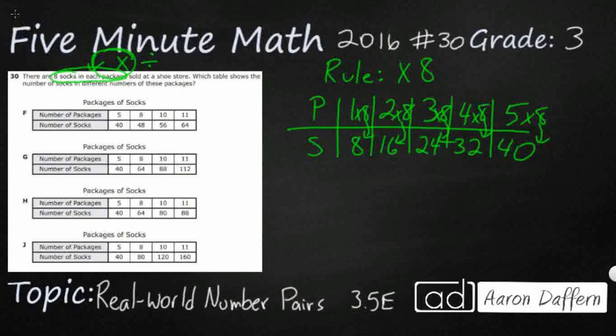You notice that each answer choice has the values five, eight, 10, or 11. We could extend our table to these values. But take a look at all your fives—they all start with the correct 5 to 40 relationship. So this is going to be tricky because it's not just the first one that's going to get us what we need.